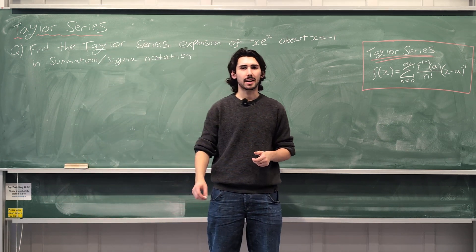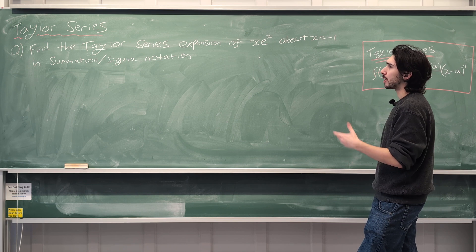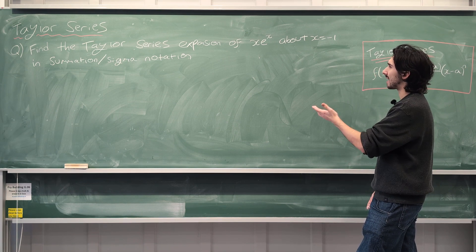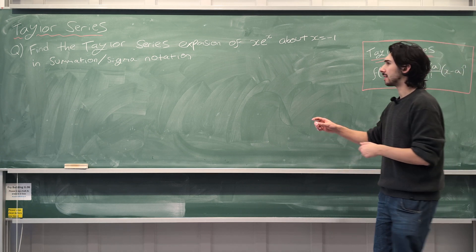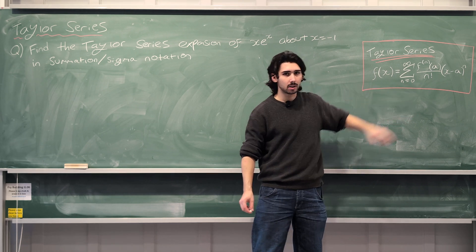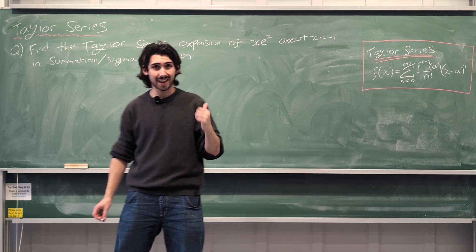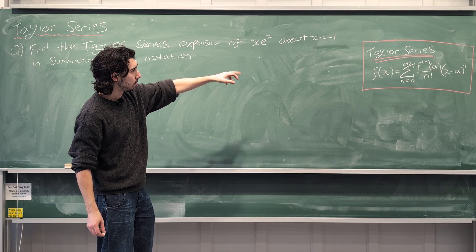Hello there guys, welcome back to another Epic and Extra Real Maths video. In this video we're doing Taylor series once again. We're going to find the Taylor series expansion of xe^x about x equals minus 1, and this is going to be in summation or sigma notation, but specifically for the function xe^x and specifically about x equals minus 1.